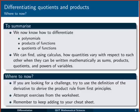So where to now? We now know how to differentiate polynomials, so constants, powers of x, constant multiples of things, and sums of all of those. We can also differentiate products of functions and quotients of functions. And we can put all of these things together as you've seen in the last couple of examples. We can find using calculus how quantities vary with respect to each other, when they can be written mathematically as sums, products, quotients, and powers of variables.